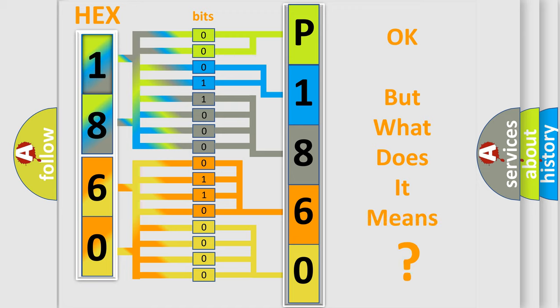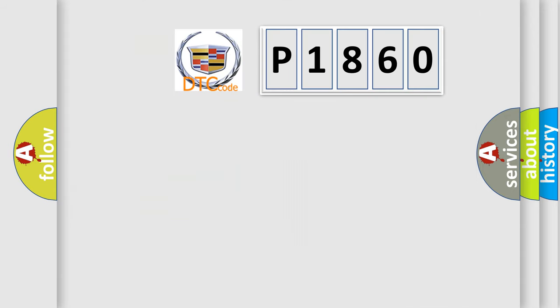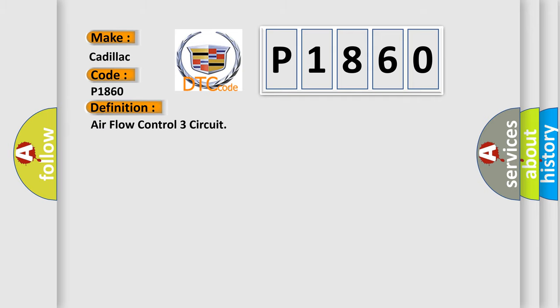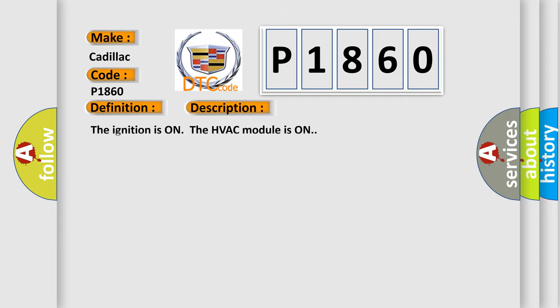We now know how the diagnostic tool translates the received information into a more comprehensible format. The number itself does not make sense to us if we cannot assign information about what it actually expresses. So, what does the diagnostic trouble code P1860 interpret specifically for Cadillac car manufacturers? The basic definition is: Airflow Control 3 Circuit.